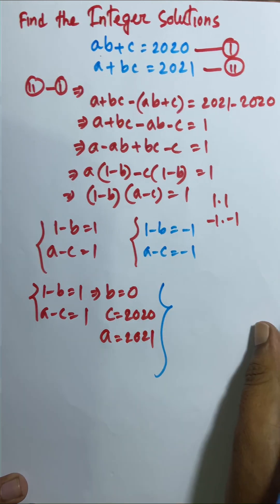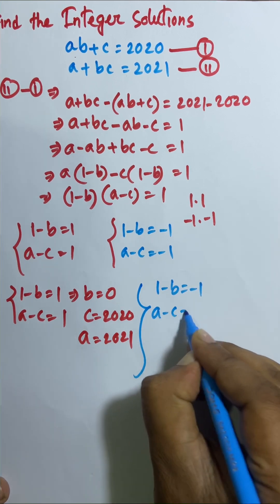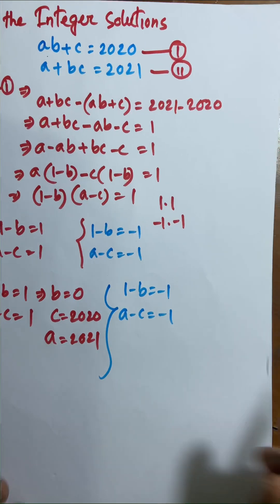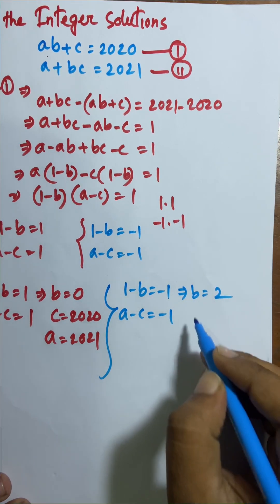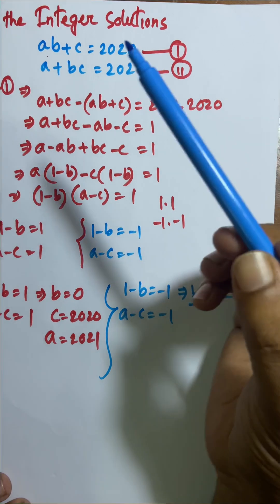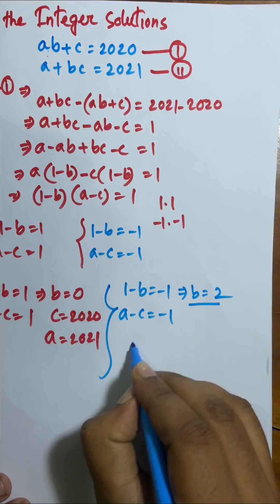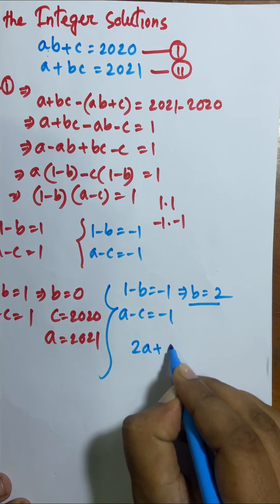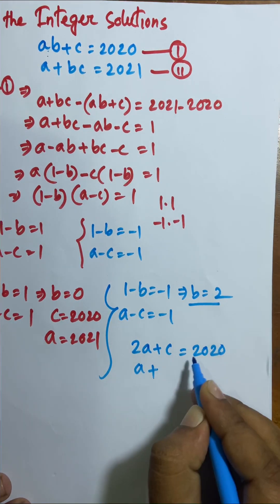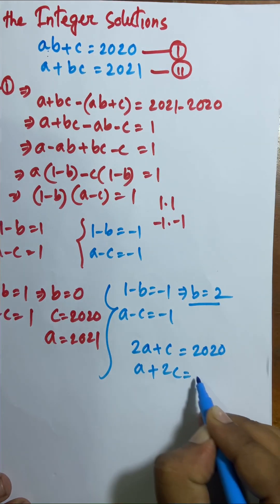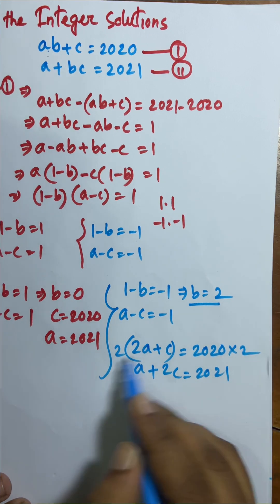Now I solve Case 2. From (1 minus b) equals negative 1, b equals 2. Substituting b equals 2 into the first equation: a plus a(2 plus c) equals 2020, and into the second equation: a plus 2c equals 2021.